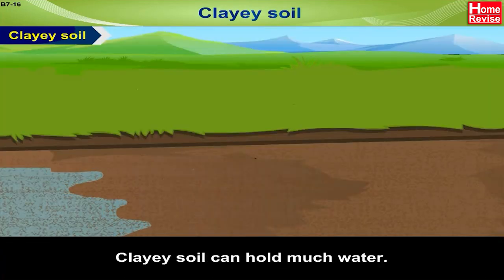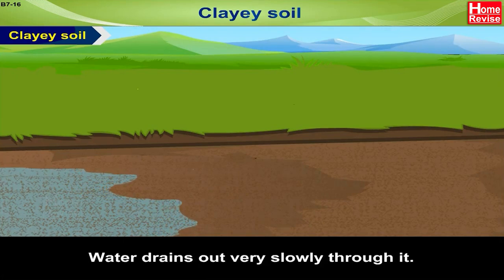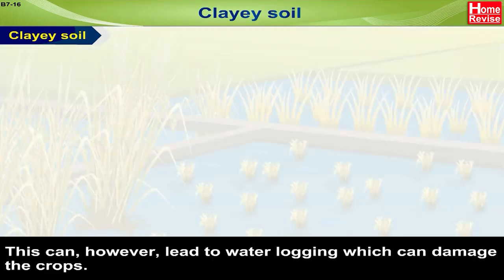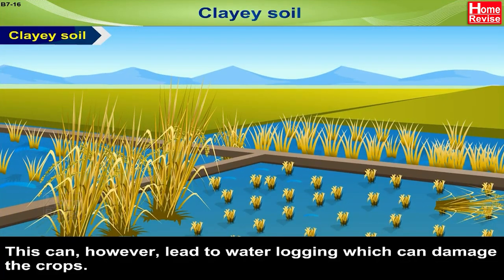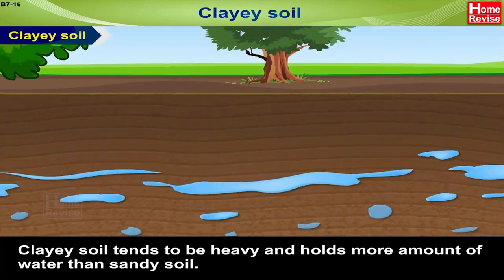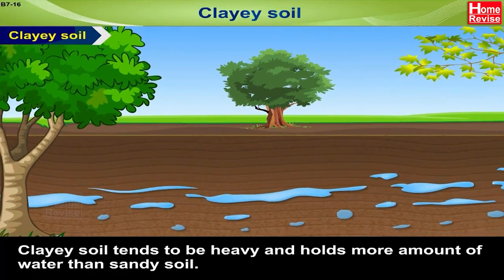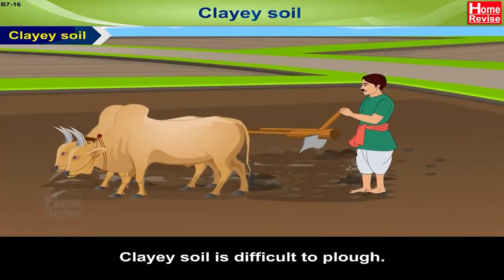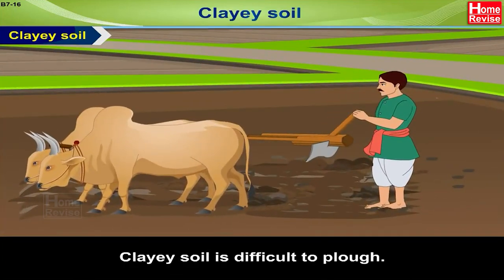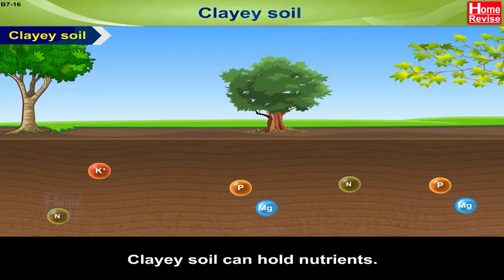Clayey soil can hold much water. Water drains out very slowly through it. This can, however, lead to waterlogging, which can damage the crops. Clayey soil tends to be heavy and holds more water than sandy soil. Clayey soil is difficult to plough. Clayey soil can hold nutrients.